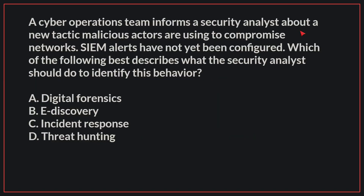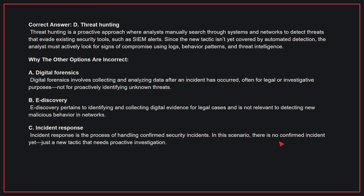A cyber operations team informs a security analyst about a new tactic malicious actors are using to compromise networks. SIEM alerts have not yet been configured. Which of the following best describes what the security analyst should do to identify this behavior? The correct answer is D: Threat hunting. Threat hunting is a proactive approach where analysts manually search through systems and networks to detect threats that evade existing security tools, such as SIEM alerts. Since the new tactic isn't yet covered by automated detection, the analyst must actively look for signs of compromise using logs, behavior patterns, and threat intelligence.